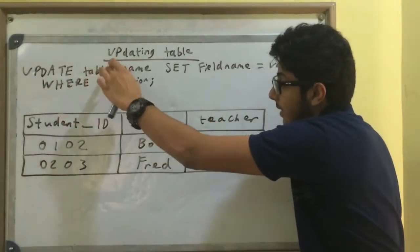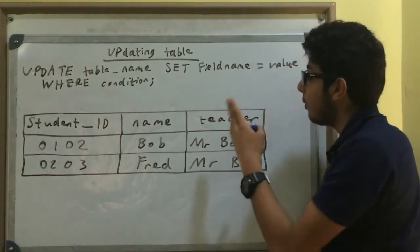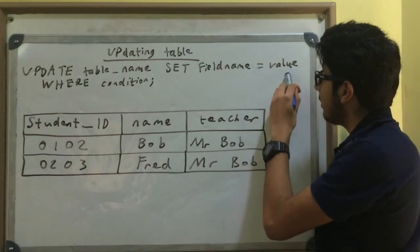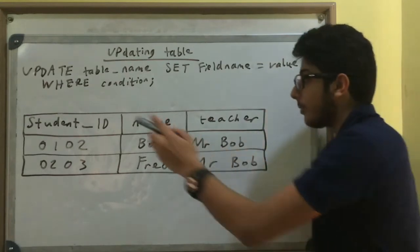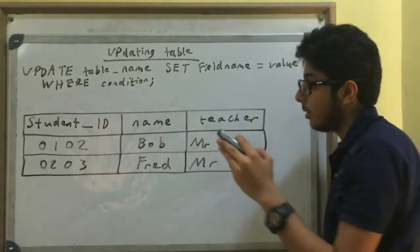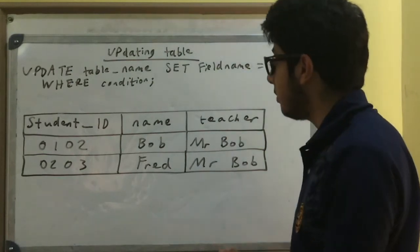We use this statement: UPDATE, and then the name of your table, SET, whatever field name you want to - the field name of where the value is that you want to change, the value you want to change it to. And then WHERE in capitals with your condition, because you're not going to change every value in the table. Otherwise you want to just create a new table.